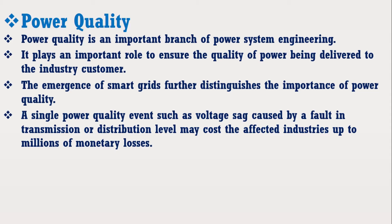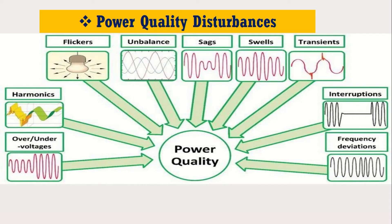A single power quality event such as voltage sag caused by a fault in transmission or distribution level may cost the affected industries up to millions of monetary losses. Power quality disturbances are categorized into various types such as voltage sag, voltage swell, transient, harmonic, voltage notch, and flicker.